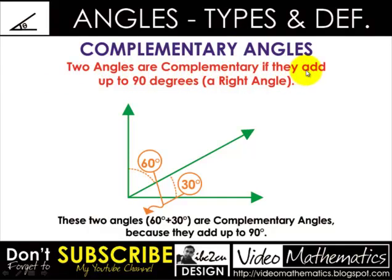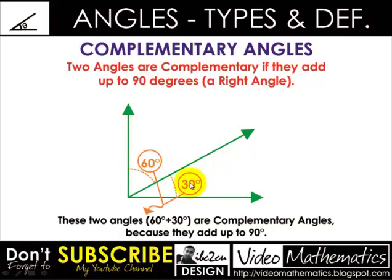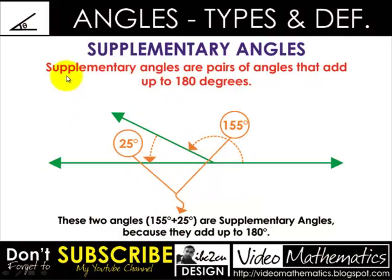The next is complementary angles. Two angles are complementary if they add up to 90 degrees, or a right angle. Look here — this angle is 60 degrees and this one is 30 degrees. By adding these two we get 90 degrees, a right angle. This means these are complementary angles.